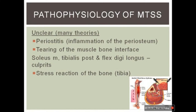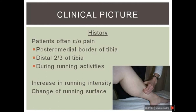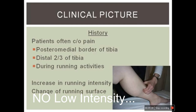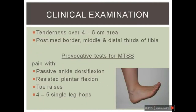The clinical picture: patients commonly present with posteriomedial tibial pain in the distal two-thirds of the tibia during running activities. Symptoms worsen with increasing running intensity or a change in running surface — for example, switching from grass to synthetic ground or from muddy ground to synthetic. Clinical examination findings include tenderness over a four to six centimeter area of the posteromedial border, middle and distal thirds of the tibia. Provocative tests include passive ankle dorsiflexion, resisted plantar flexion, toe raises, and four to five single leg hops.